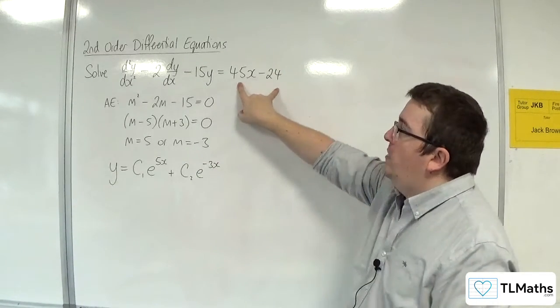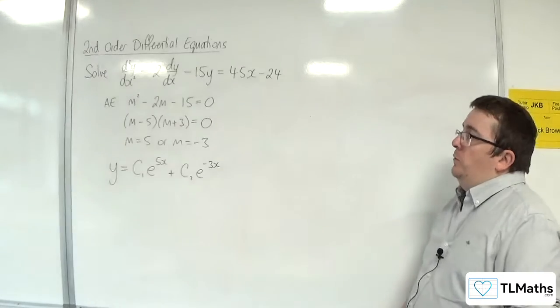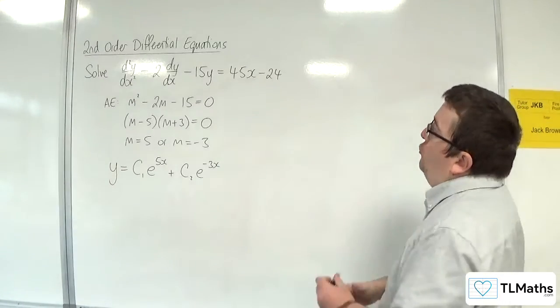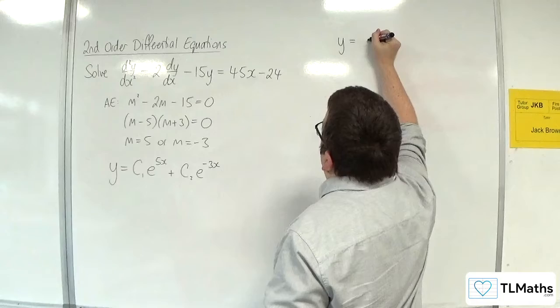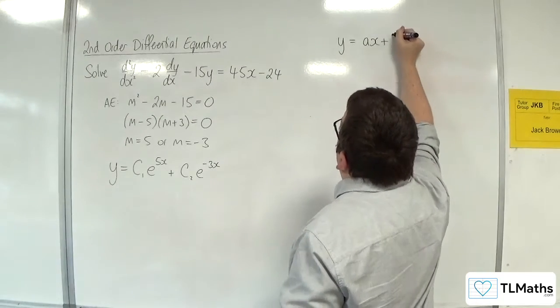Now we look at the right hand side, and we see that we've got a linear function, so I need a trial function that is also linear. So I'm going to use ax + b.